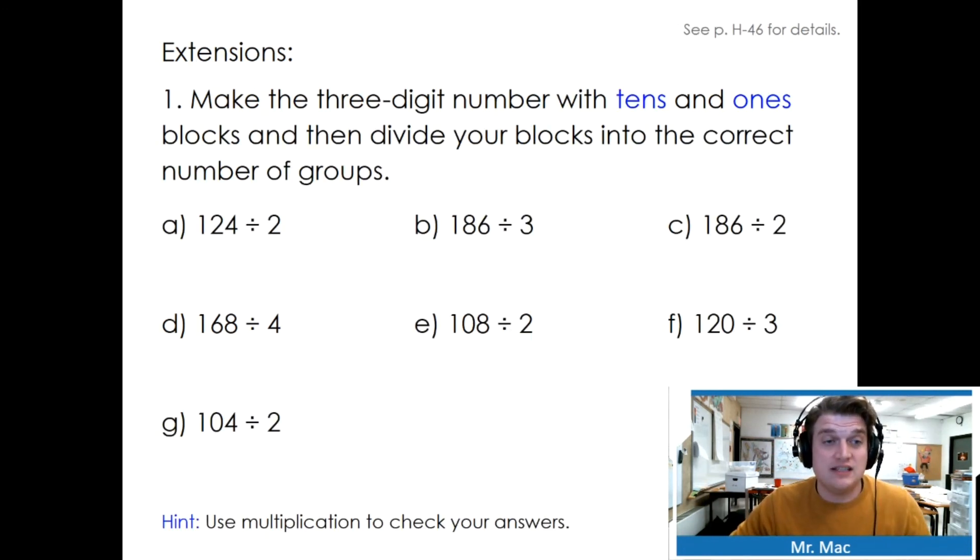Make the three-digit number with tens and ones blocks, and then divide your blocks into the correct number of groups. So tens and ones blocks. I have 12 tens and 4 ones. Can I share 12 tens and 4 ones with 2? Absolutely. Half of 12 tens is 6 tens. Half of 4 ones is 2 ones. What's my answer? 62. Go ahead, try the next ones.